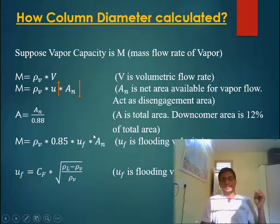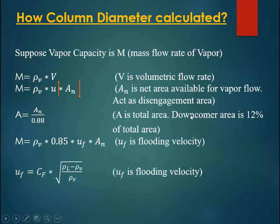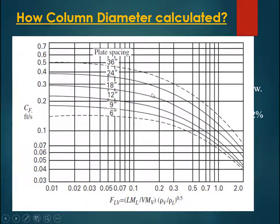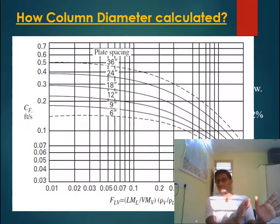The flooding velocity can be given by the expression: u_flood = Cf × sqrt((rho_l - rho_v) / rho_v), where rho_l is liquid density, rho_v is vapor density, and Cf is the flooding factor. Cf depends on plate spacing and the flooding parameter FLB, where FLB equals (L/V) × sqrt(rho_v / rho_l), with L and V being the mass flow rates of liquid and vapor respectively.